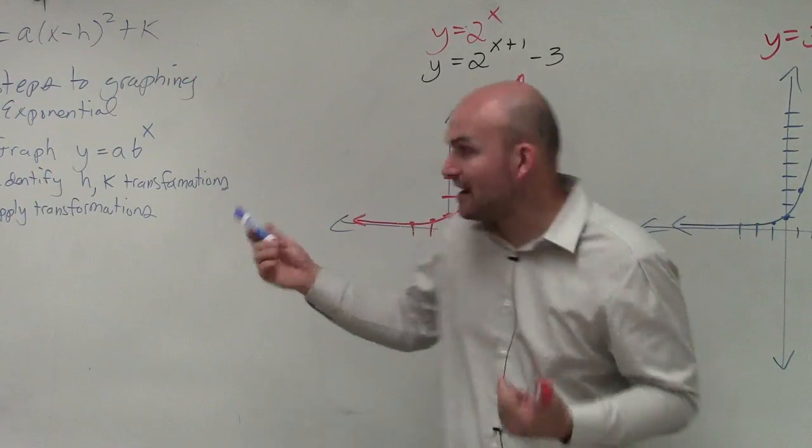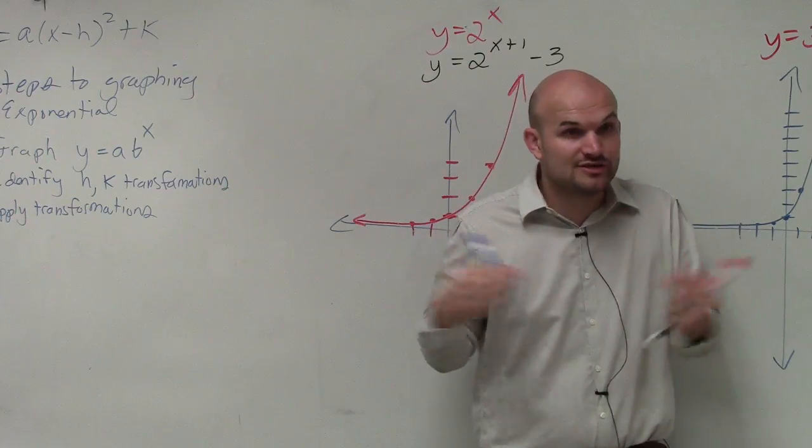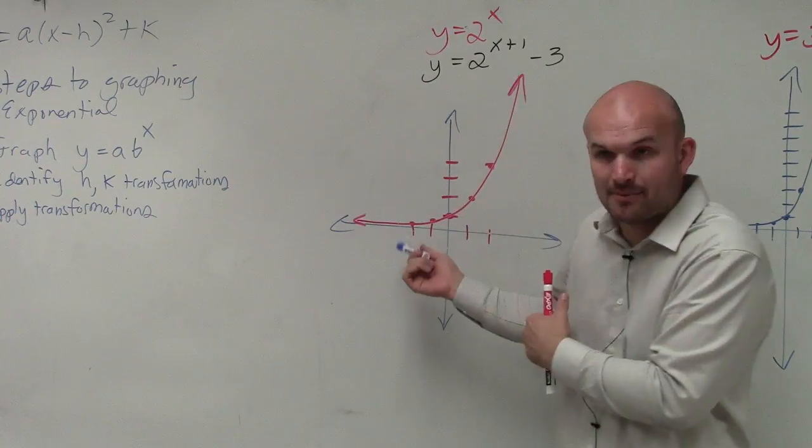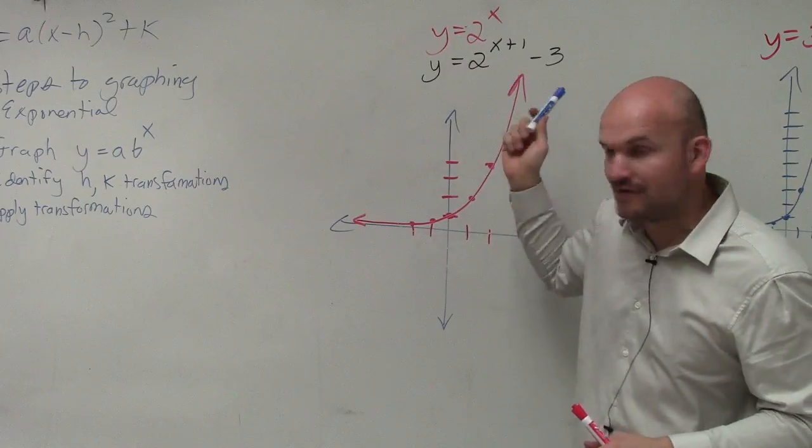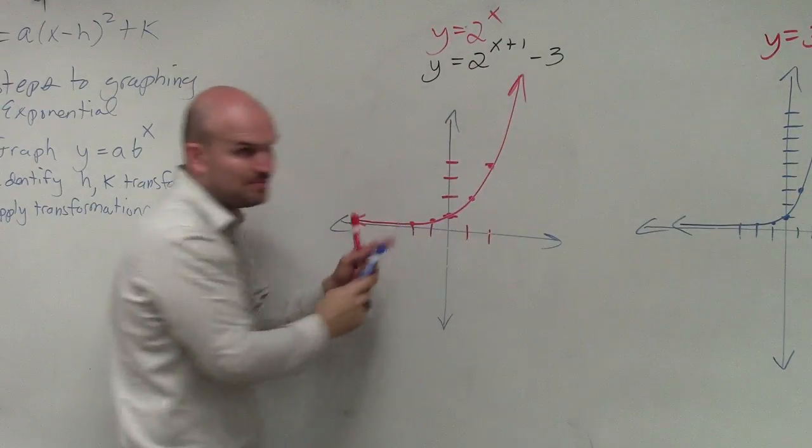The first step is graphing the parent graph, which I just made you guys do from the start. We didn't even use the table. So we graphed the parent graph y equals 2 to the x. We used the table and we found these points.